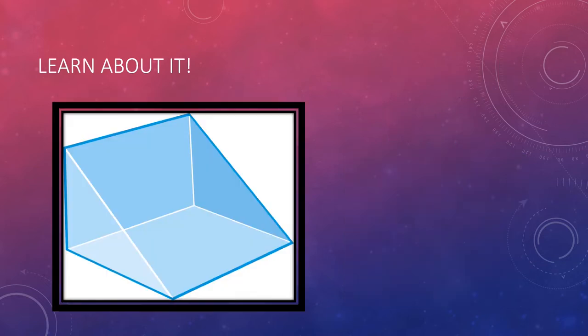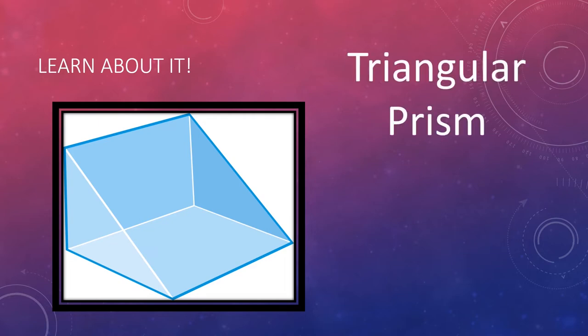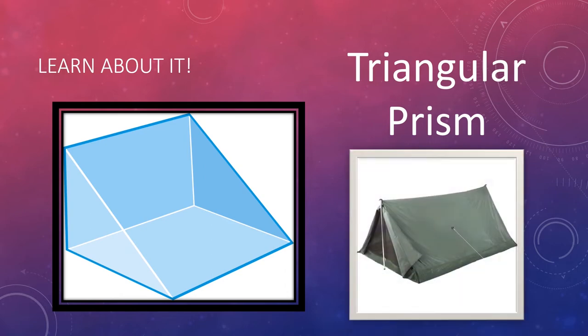Let's take a look at our next 3D shape. Do you have any idea what this is called? It's a triangular prism. Do you have any examples of triangular prisms? My example is this tent. What characteristics can you use to describe a triangular prism?